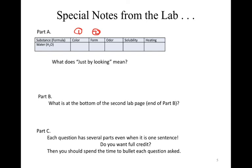If we look at part B, this is going to be a little pop-up question. What is at the bottom of the second lab page, i.e. the end of part B for this lab? And part C, each question has several parts, even when you only have one sentence. So this means read the question very carefully. Do you want full credit on your lab? If the answer is yes, then you should spend the time to go through and identify what each sentence asks. So how many different questions are in each sentence? There are several cases where there's two sentences and four or five questions that need to be answered.